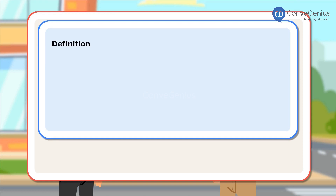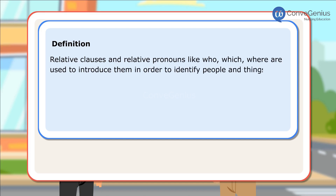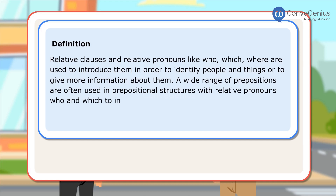Definition: Relative clauses and relative pronouns like who, which, and where are used to introduce them in order to identify people and things or to give more information about them. A wide range of prepositions are often used in prepositional structures with relative pronouns who and which to introduce relative clauses.